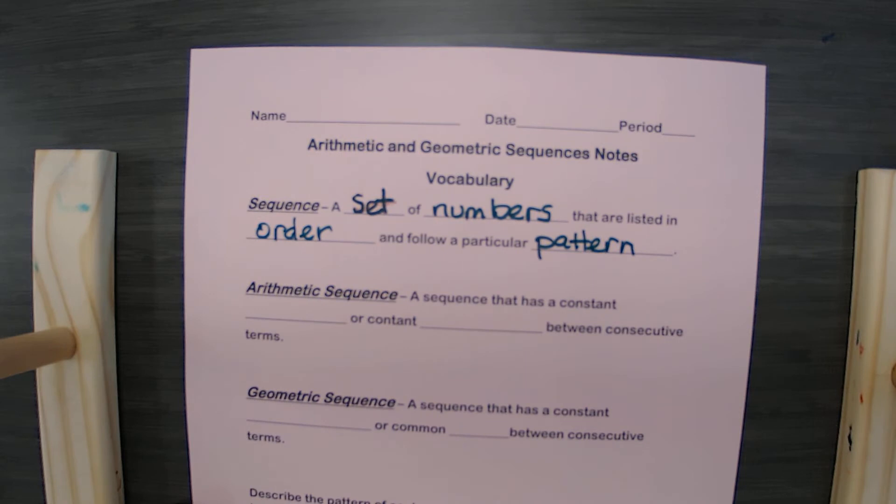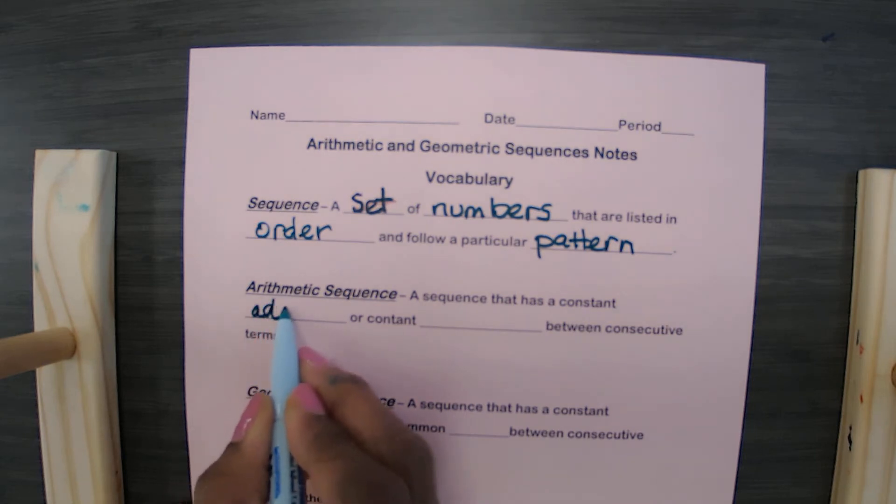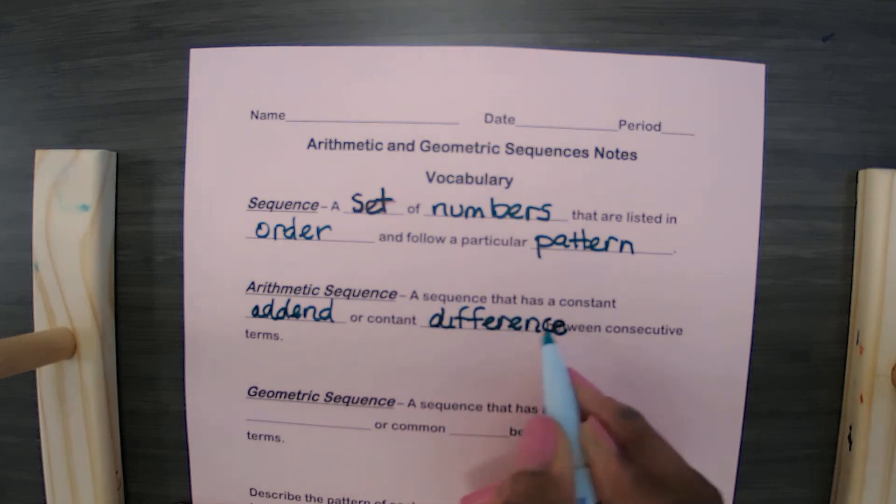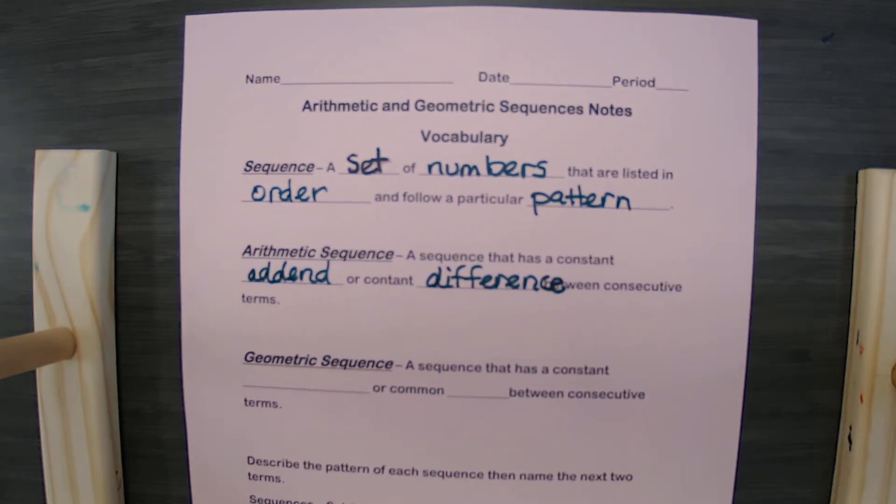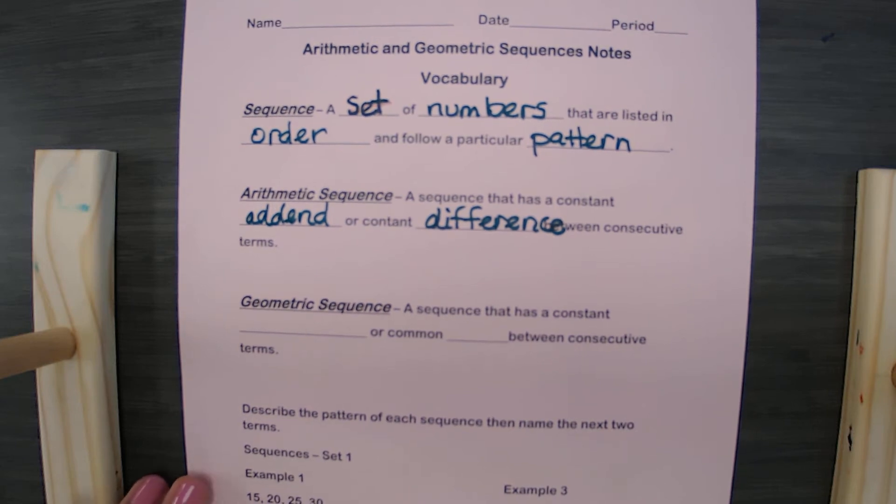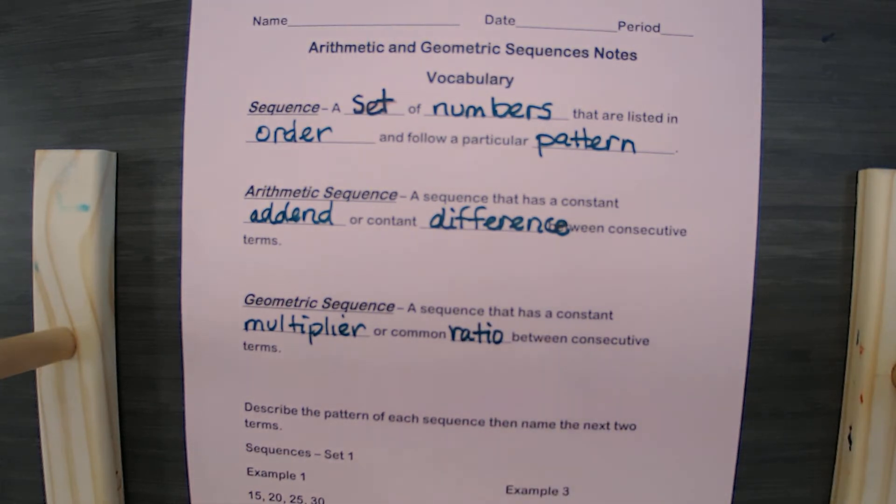Number one, the arithmetic sequence. A sequence that has a constant addition or a constant difference between the consecutive terms. And consecutive is one right after another. Geometric: a sequence that has a constant multiplier or a common ratio between consecutive terms, one right after the other.